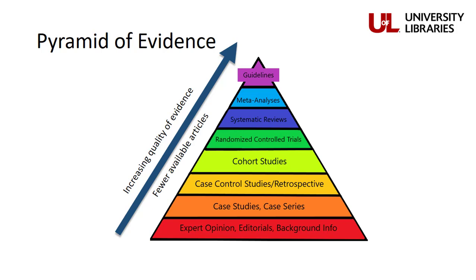You may not always be able to find a systematic review or randomized controlled trial on your topic. Depending on what you're looking for, a case control study or a case series might be the best evidence available. Therefore, it's always very important that you look through all your search results to make sure you're aware of the different types of research articles written on your topic. It's not good enough to just select the first three articles, because what if they're all editorials or case studies, and your fourth or fifth result is a randomized controlled trial or cohort study?